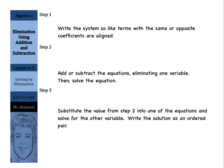So again, step one: write the system so like terms with the same or opposite coefficients are aligned. Step two: add or subtract the equations, eliminating one variable, then solve the equation. And step three: substitute the value from step two into one of the equations and solve for the other variable. Write the solution as an ordered pair.